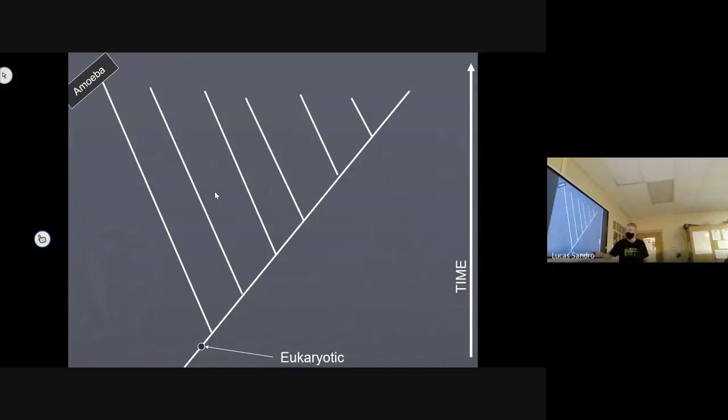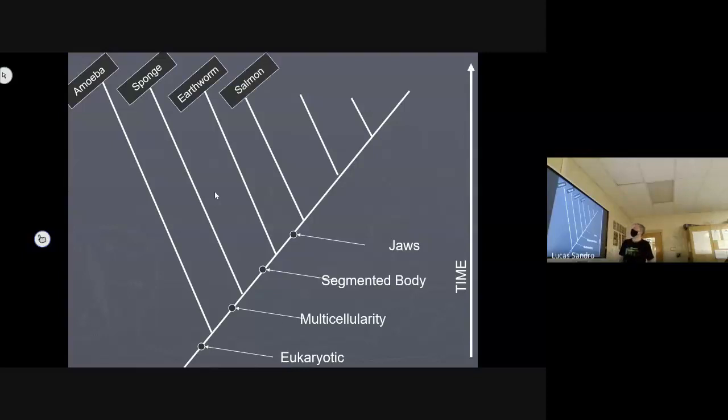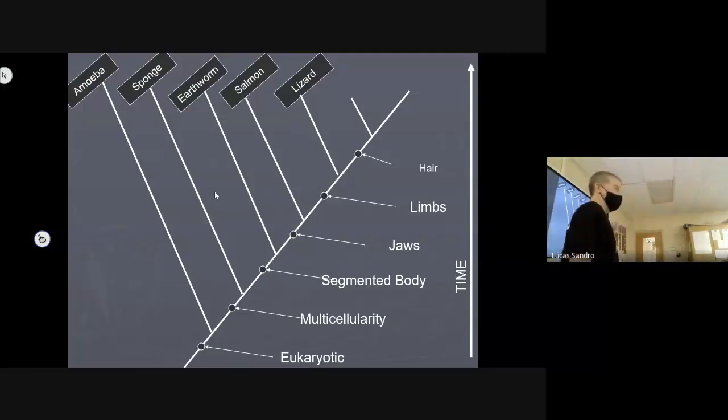So instead we do this. Don't draw it yet, but you're going to draw it. And what we do is we put the derived characters right there on the trunk of the tree, right before the first critter that has them. So right here, eukaryotic shows up. That's where amoeba gets off the bus. It doesn't get any more of these derived characters that are going to be on this main trunk. Just like multicellularity. Cool, that shows up, and then sponge gets off the bus.